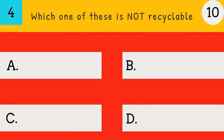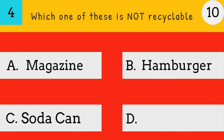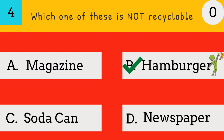Which one of these is not recyclable? Magazine, Hamburger, Soda Can, Newspaper. Answer: Hamburger. Hamburger from these is not recyclable.